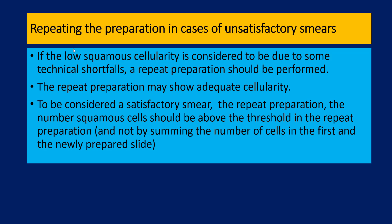What about repeating the preparation in cases of unsatisfactory smears? If a smear shows low squamous cellularity and by looking at it you feel it could be due to some technical shortfall, it might be a good idea to repeat the preparation, because quite often the repeat preparation may show adequate cellularity. To be considered satisfactory, the repeat preparation's squamous cell count must be above the threshold on its own — you cannot sum up the two preparations. So if the first smear has a cellularity of 3,500 and the second smear 4,000, that totals 7,500 but you cannot call it adequate. The second smear by itself must have a count of more than 5,000.